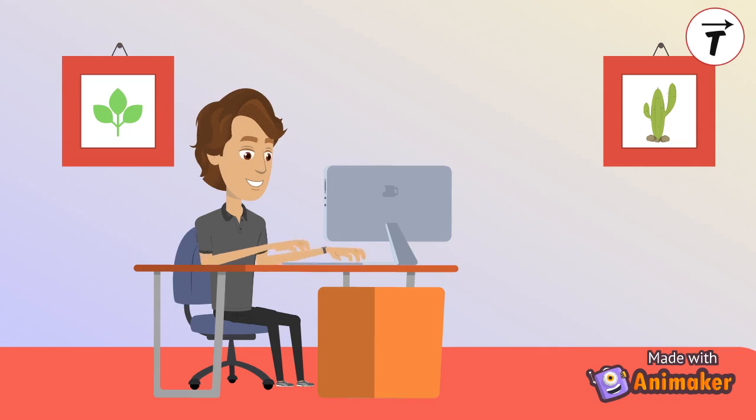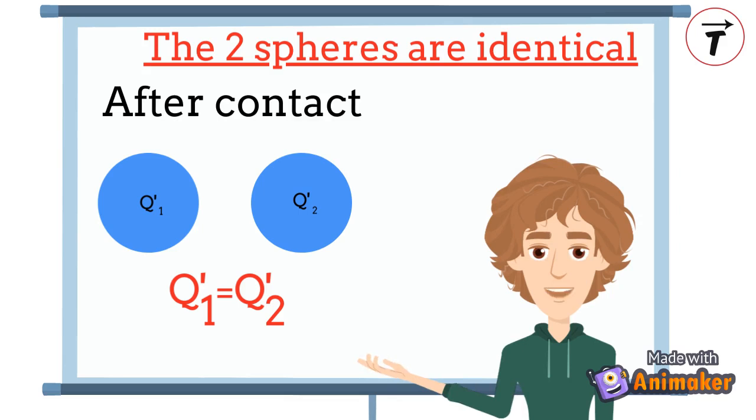What happens if the two conductors have the same size, shape, material, and other characteristics? Such two conductors are called identical conductors. Regardless of their charge before contact, they will have the same charge after contact, so q1 prime equals q2 prime.